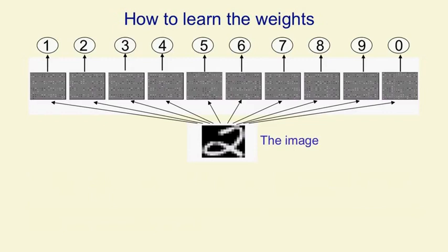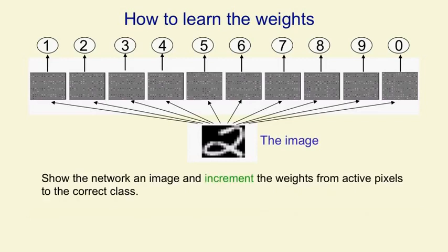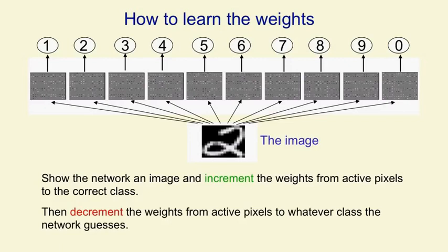The way we're going to learn is when we show it an image, we're going to increment the weights from the active pixels in the image to the correct class. If we just did that, the weights could only get bigger and eventually every class would get huge input whenever we showed it an image. So we need some way of keeping the weights under control and what we're going to do is we're also going to decrement the weights from the active pixels to whatever class the network guesses. So we're really training it to do the right thing rather than the thing it currently has a tendency to do. If it does the right thing then the increments we make in the first step of the learning rule will exactly cancel the decrements and so nothing will change, which is what we want.